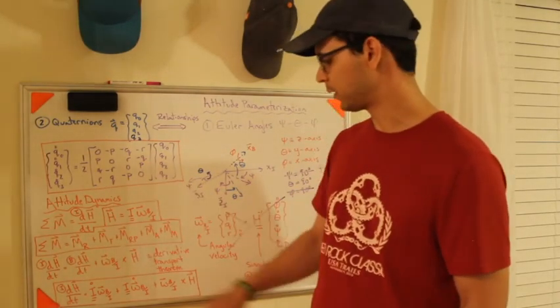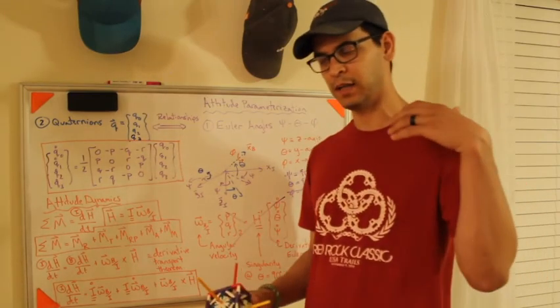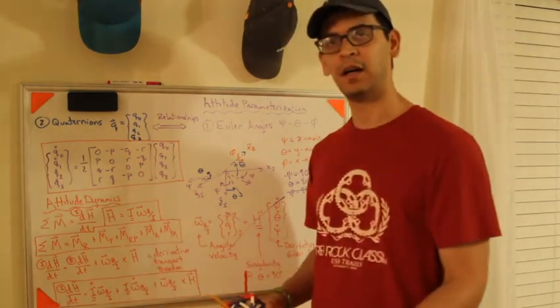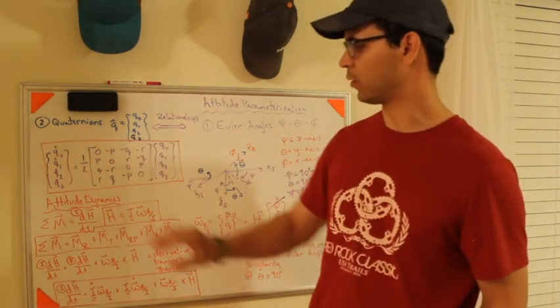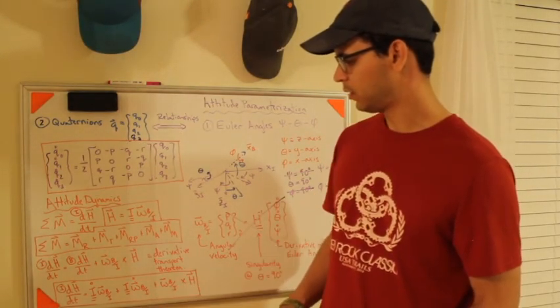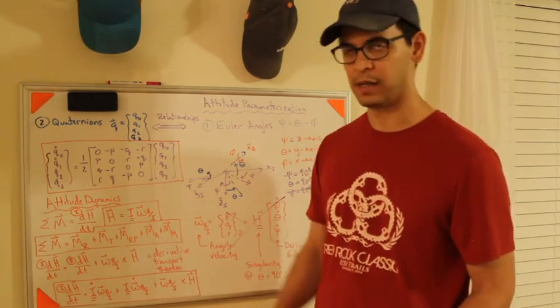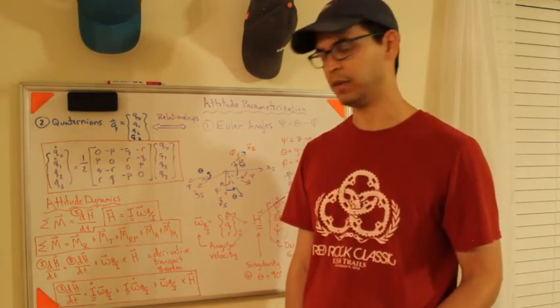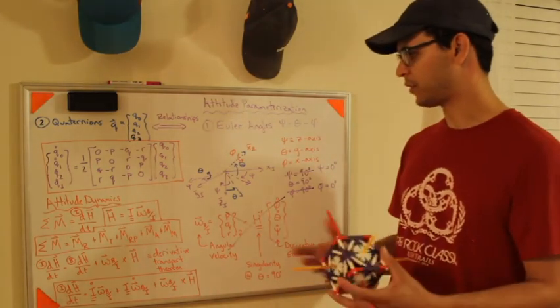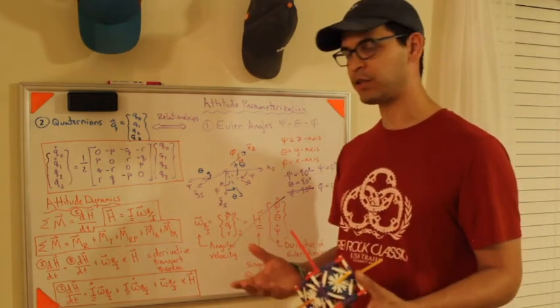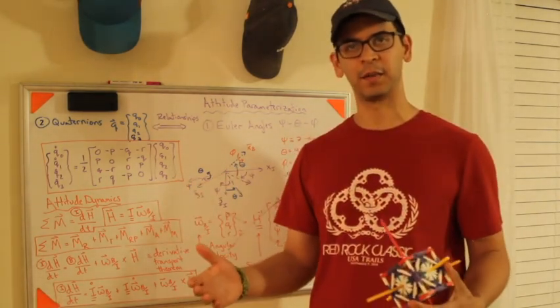Keep this in mind, these red boxes here, because when I go and I simulate this on a numerical integrator, I'm going to use this to integrate the quaternions and I'm going to use this to integrate the angular velocity vector. OK,